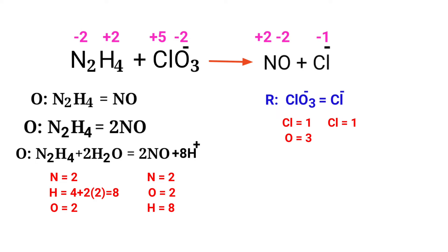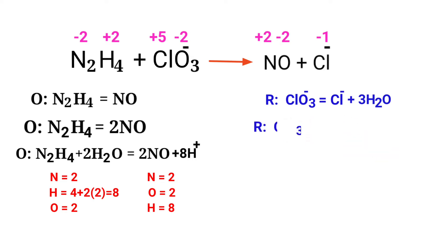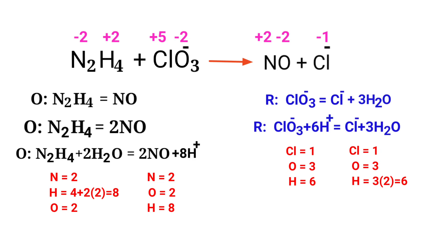Now balance the number of atoms in the reduction half reaction. To balance the oxygen atoms, produce water molecules and add H⁺ ions — the oxygen atoms are now balanced. Then balance the hydrogen atoms by producing H⁺ ions. Now the number of atoms are fully balanced in the reduction half reaction.